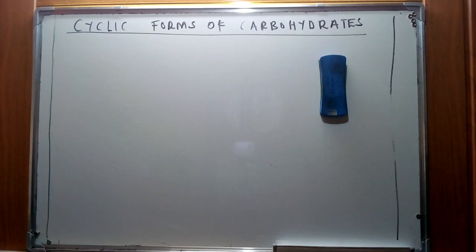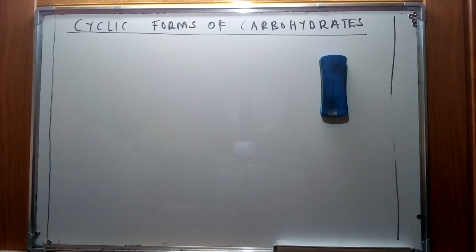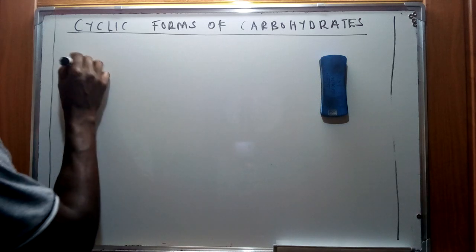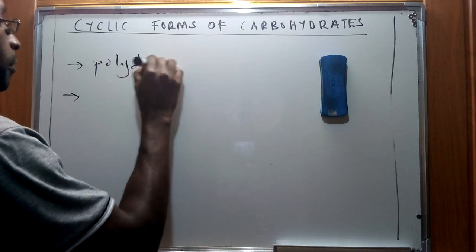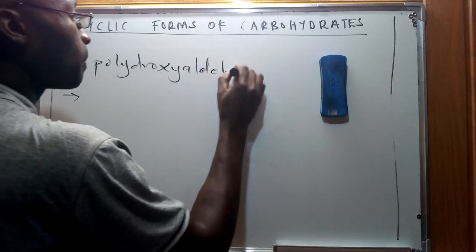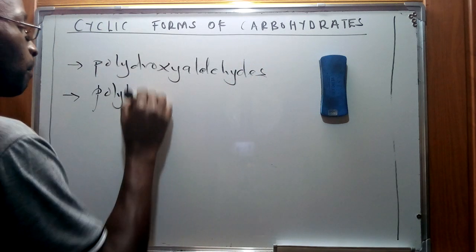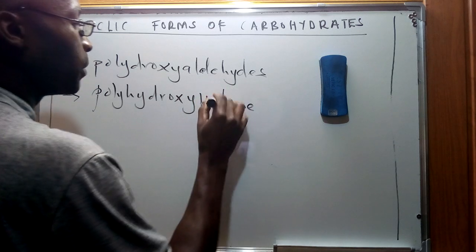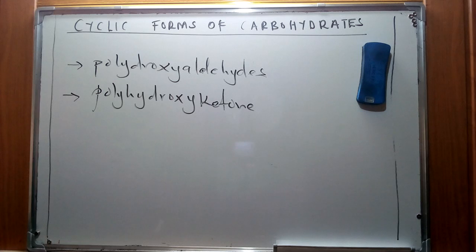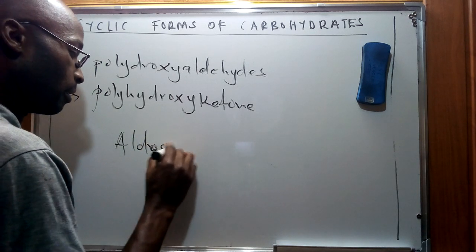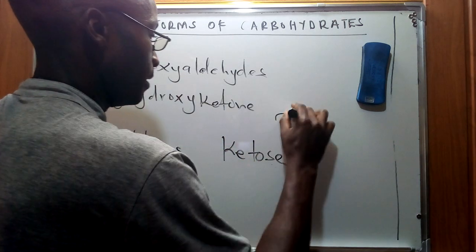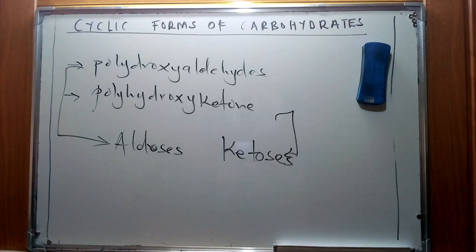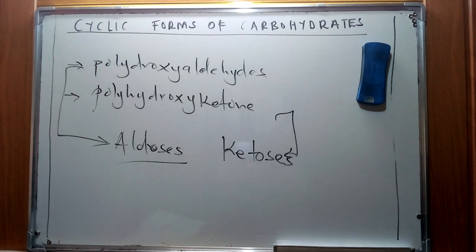Today's discussion is centered around finding a way of representing the cyclic forms of carbohydrates. We're going to see a comparison between the Fischer projection of carbohydrates and the cyclic forms resulting from them. We have already discussed two product categories of carbohydrates: the polyhydroxy aldehydes and the polyhydroxy ketones.